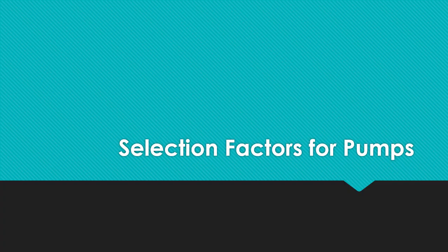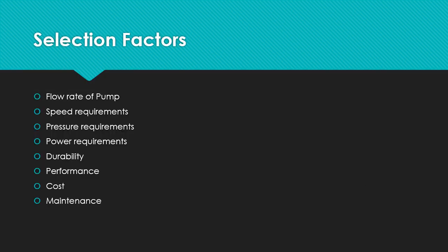So what are the selection factors for pumps? The main selection factors are the flow rate, speed requirements, pressure requirements, power requirements, durability, performance, cost, and maintenance. These are all the selection factors based on which we choose a pump.